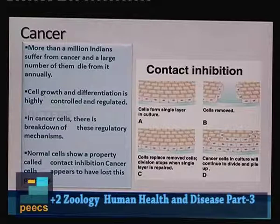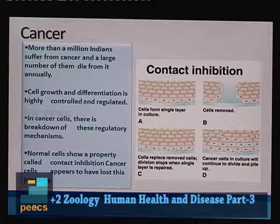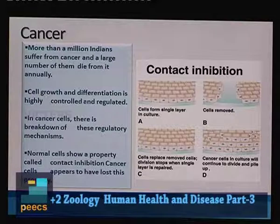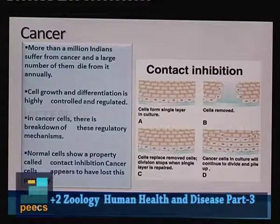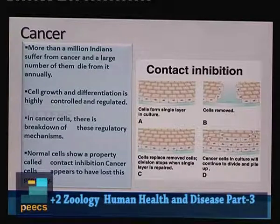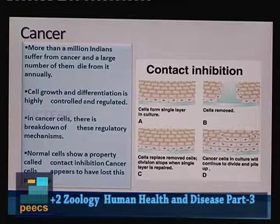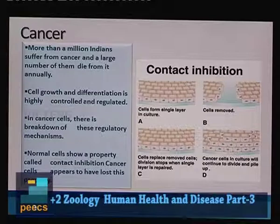Now we move to the next topic: cancer. Cancer is one of the non-infectious diseases affecting humans. More than a million Indians suffer from cancer and a large number die annually. Normal cells have regulation in their growth, differentiation and development. But in cancerous cells, all these regulatory mechanisms of cell growth, cell differentiation are lost — there is a breakdown of all regulatory mechanisms involved in cell division, growth and differentiation.